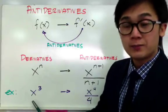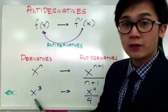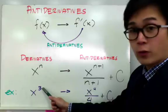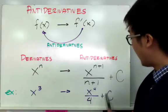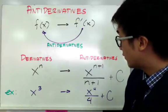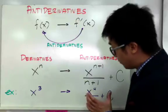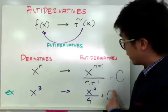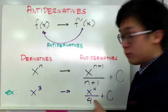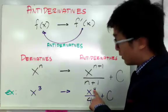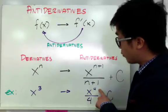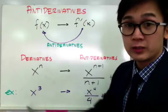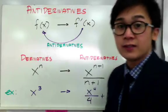Let's say you have x cubed and you want to find the antiderivative of x cubed. Using the formula, you add 1 to your exponent, so it becomes x to the 4th, and you bring down 4 as your denominator and add a constant. If you're not convinced, if you perform a derivative on this function, any constant's derivative turns into 0. For this term, bring down the exponent and subtract 1 from the exponent — so this becomes 3. So 4 over 4 times x raised to 3, cancel the 4, and you end up with your original derivative function. That's how antiderivatives work in calculus.